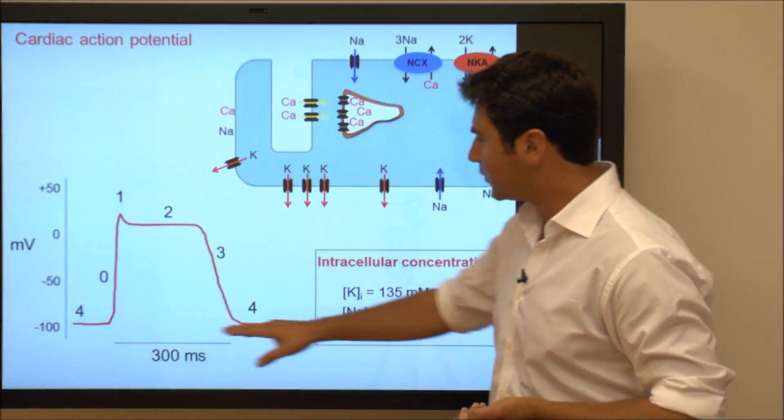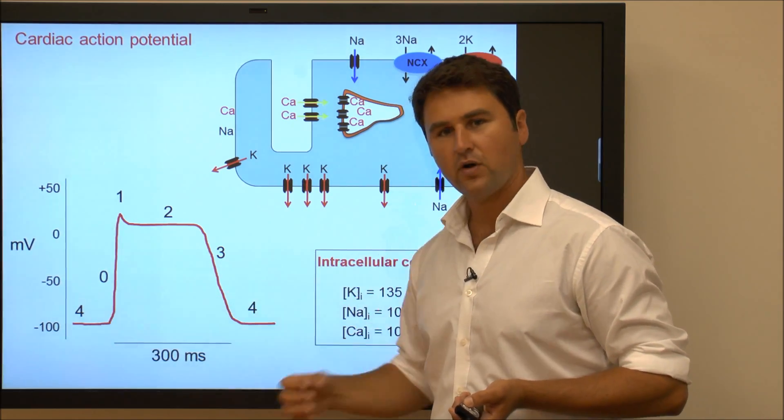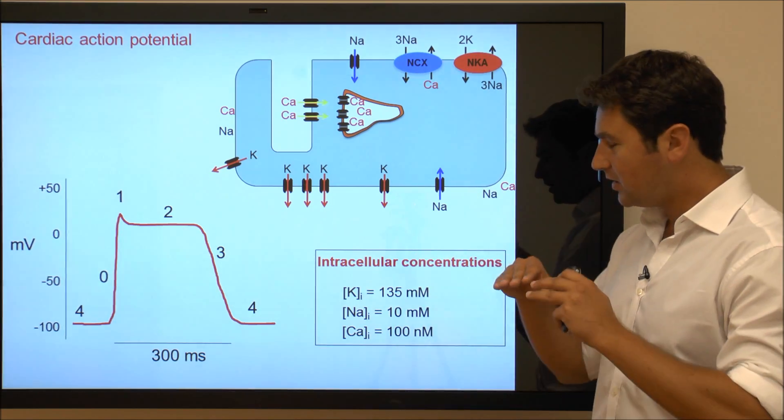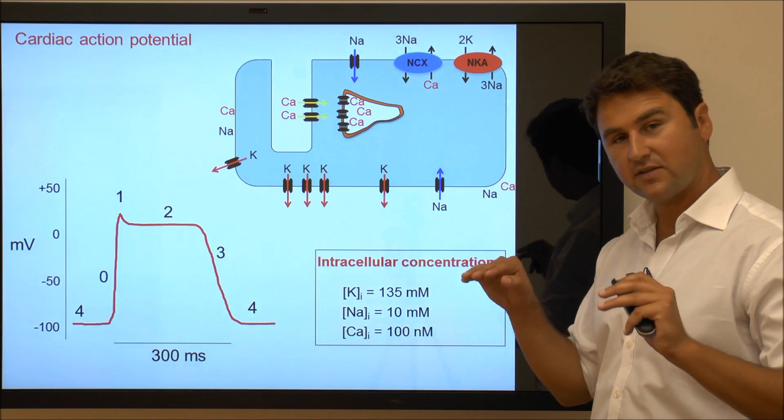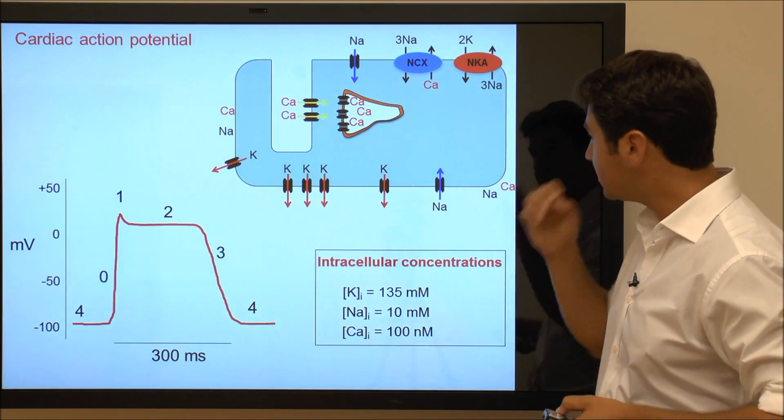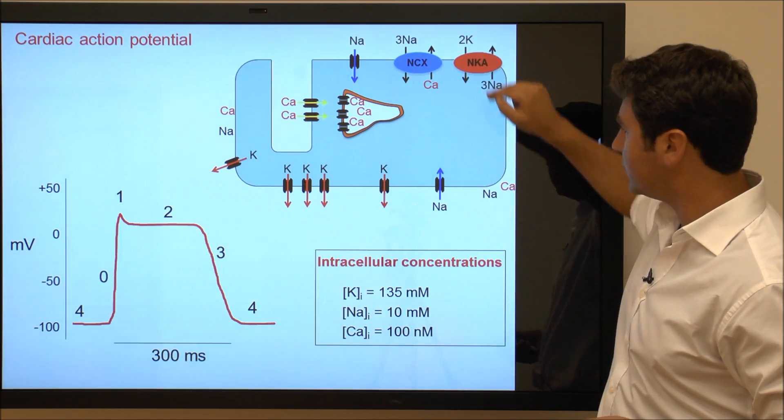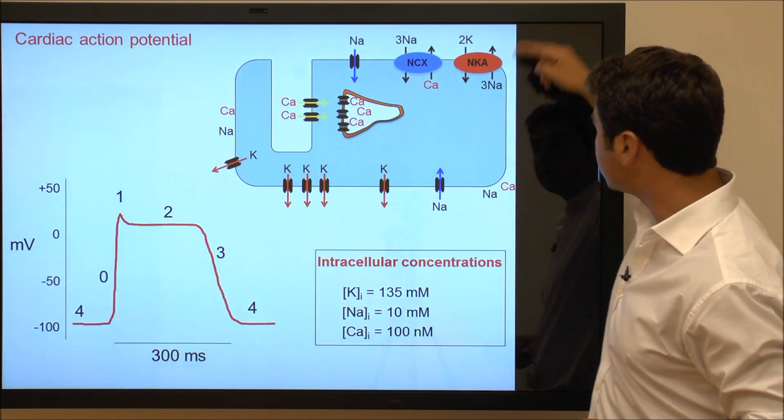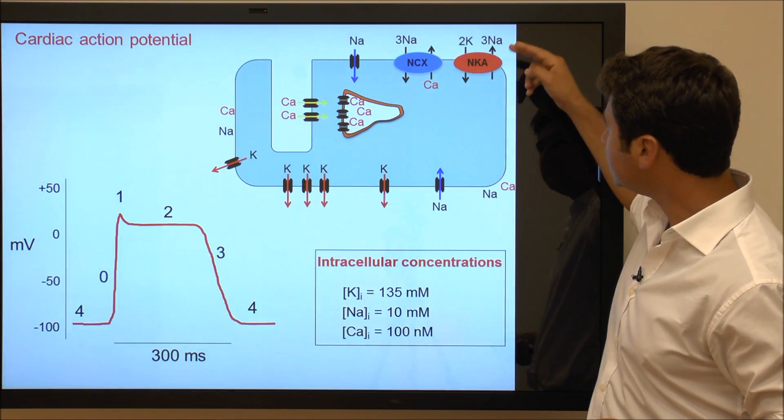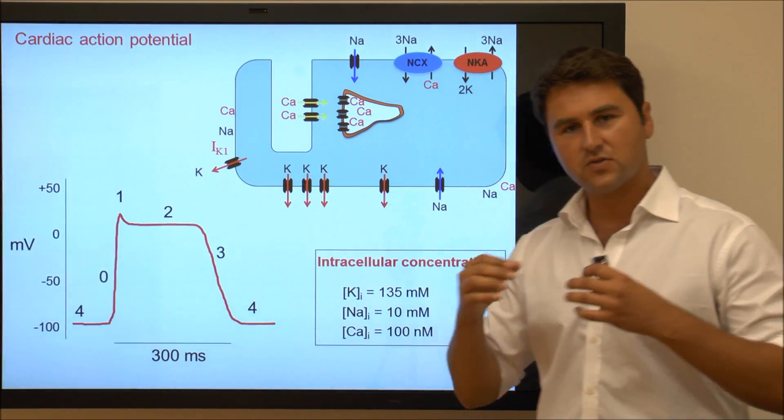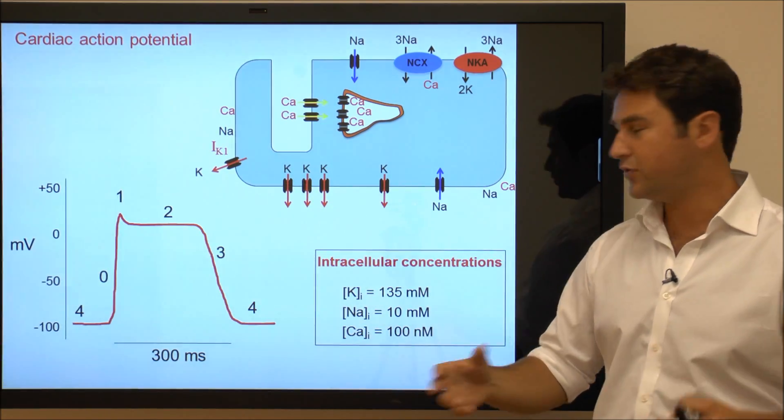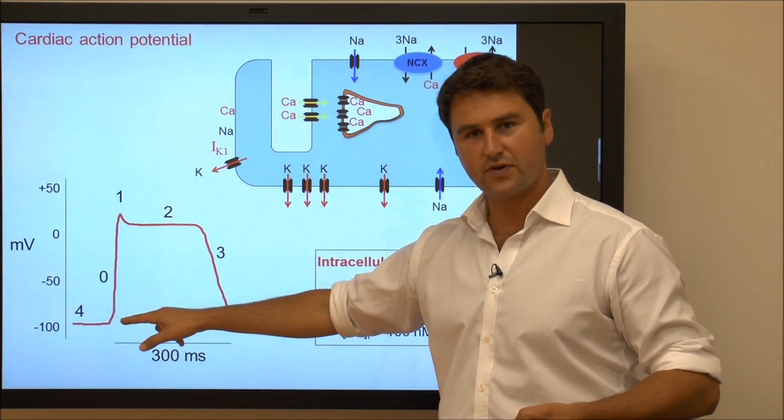So the first thing that happens is we are in phase 4 where the voltage is kept very negative at minus 90 millivolts by the actions of the sodium pump extruding sodium in exchange for potassium, and the potassium channel IK1. So a lot of positive charges are being extruded, which means that membrane potential is very negative.